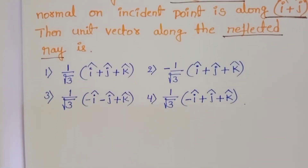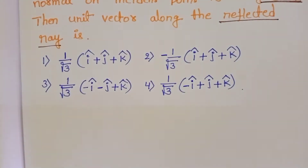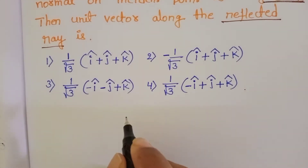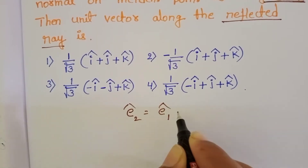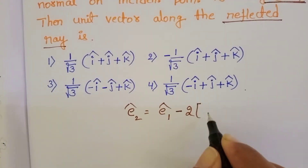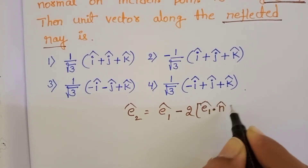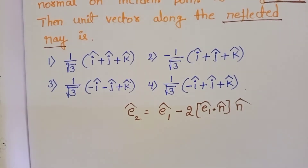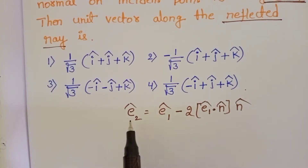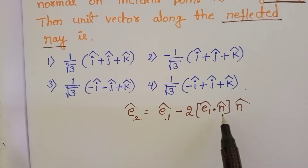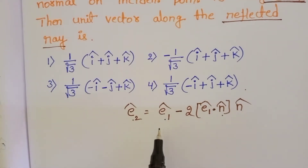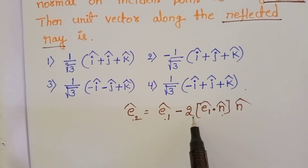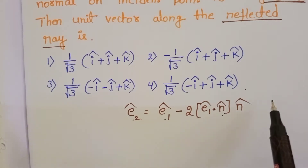The relation between incident light ray, reflected ray and the normal is: e₂ = e₁ - 2(e₁·n̂)n̂. This is the relation between reflected ray, incident ray and normal. Other than this formula we can also solve this problem, but this is very easy. Remember: e₂ = e₁ - 2(e₁·n̂)n̂.